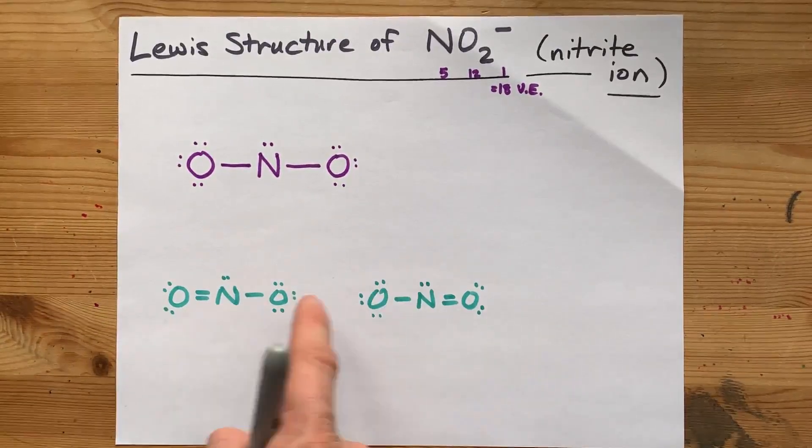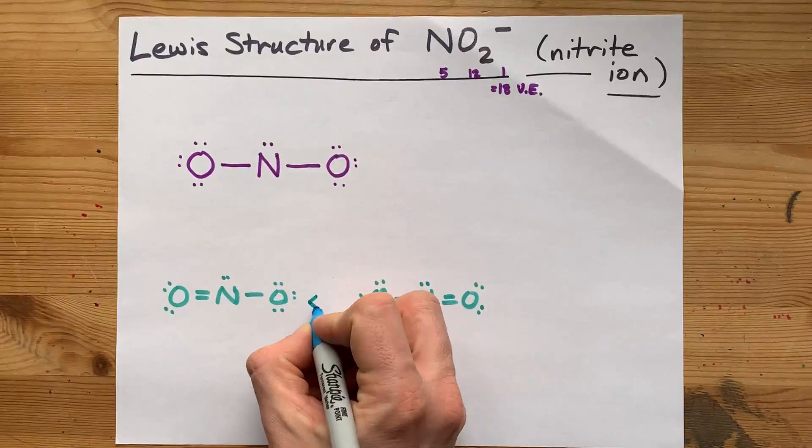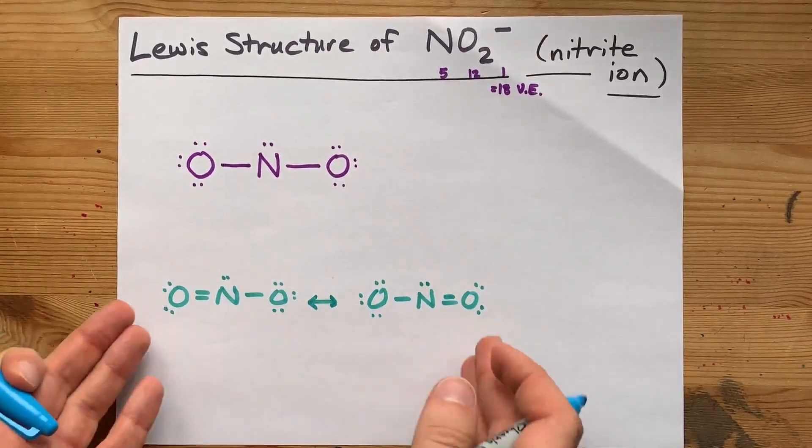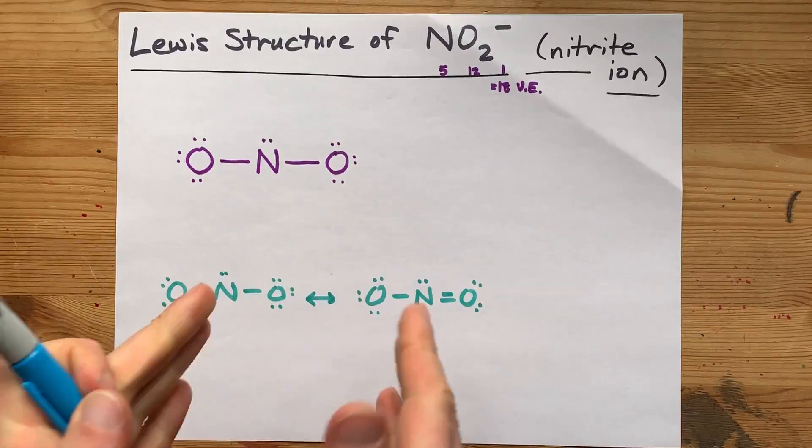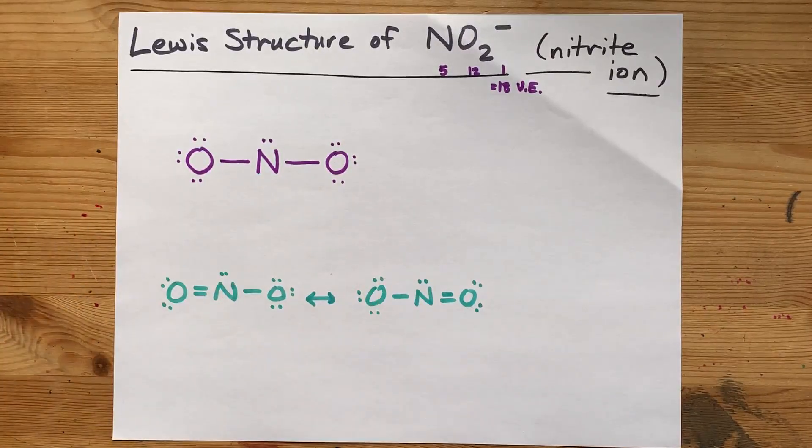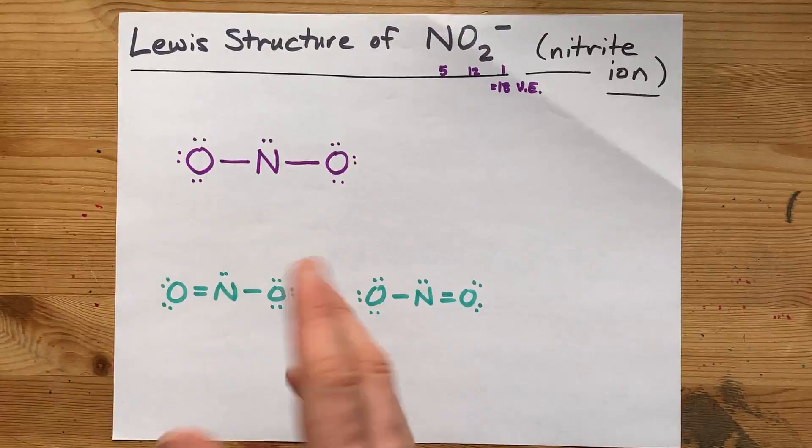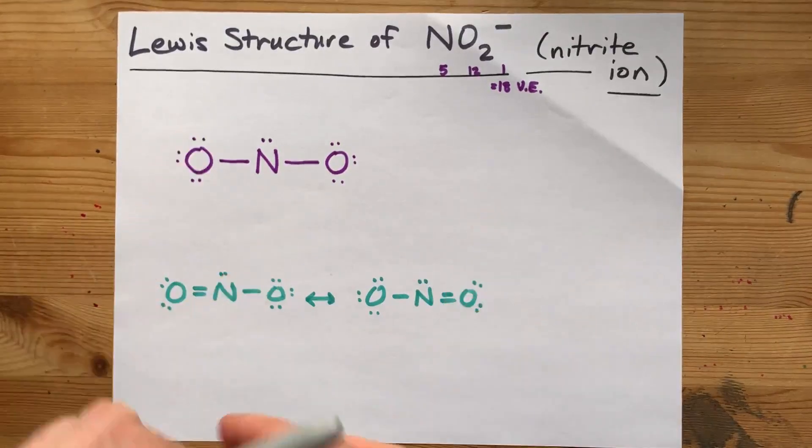Now, officially, these are called resonance structures. And the actual structure of NO2 minus, the ion, is somewhere in between these two. That structure is called a resonance hybrid.